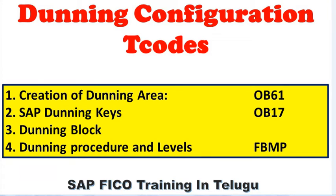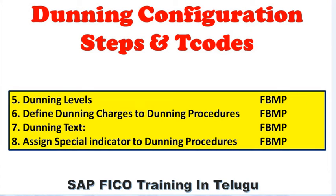The third one is dunning block. The fourth one is dunning procedure and levels, which can be done with t-code FBMP. The fifth one is dunning levels, also done with t-code FBMP. The sixth one is define dunning charges to dunning procedure, which also uses t-code FBMP.